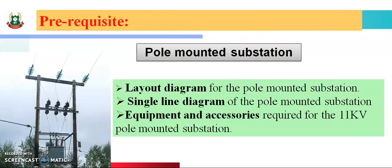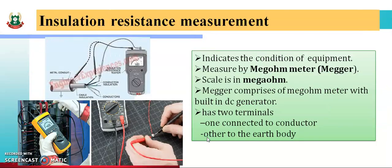In the previous lecture we studied about the pole mounted substation. In that lecture we studied the layout diagram and single line diagram of pole mounted substation, and also the equipment and accessories required for an 11 kV pole mounted substation. In this session we are going to learn about insulation resistance measurement.